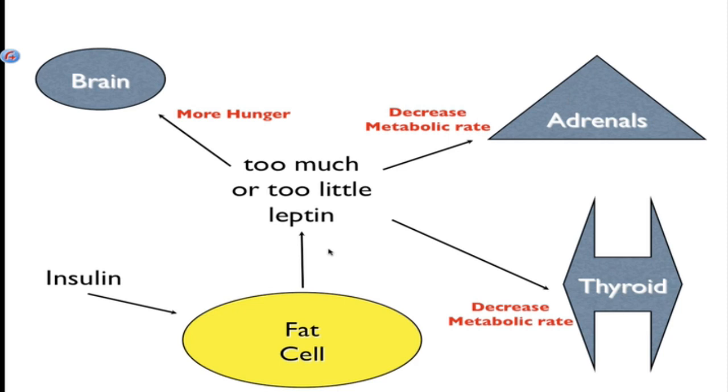The brain signals more hunger, you get more cravings, and your metabolic rate decreases. This is what's known as metabolic compensation. This is what causes yo-yo weight regain.